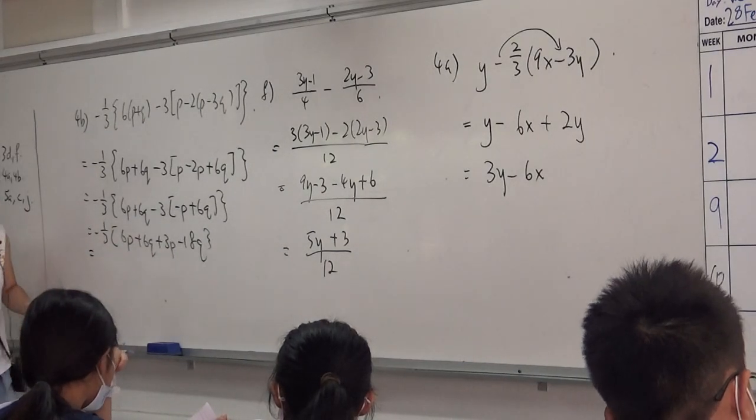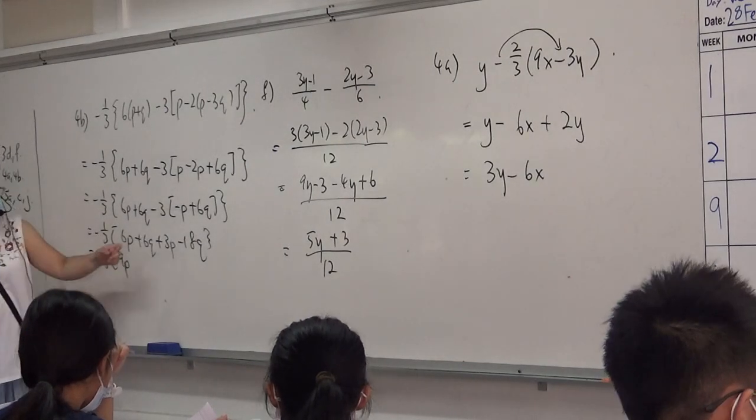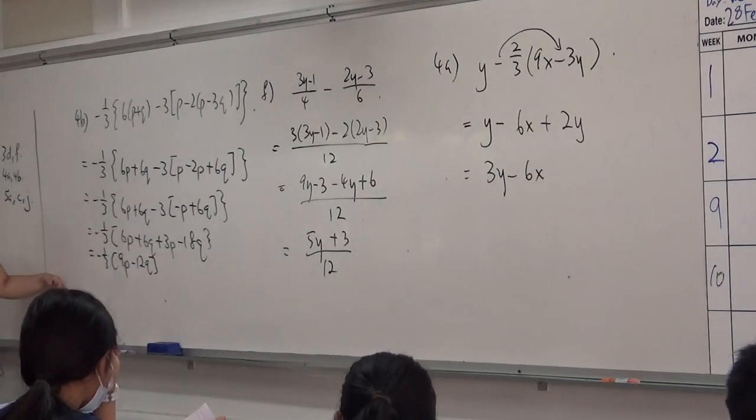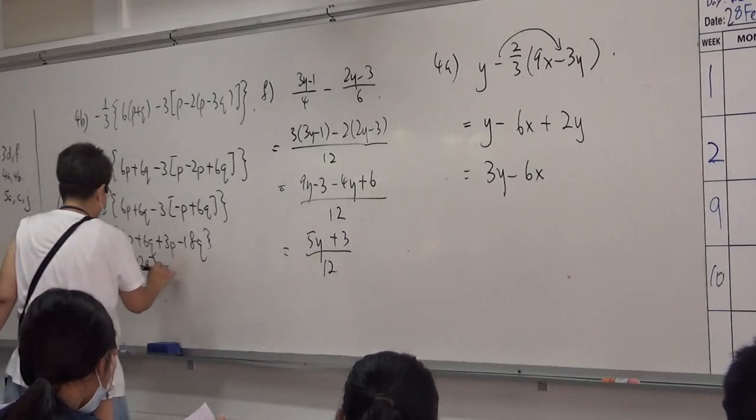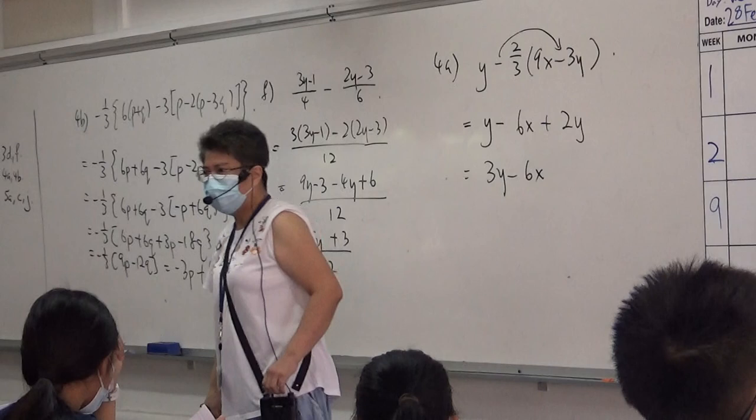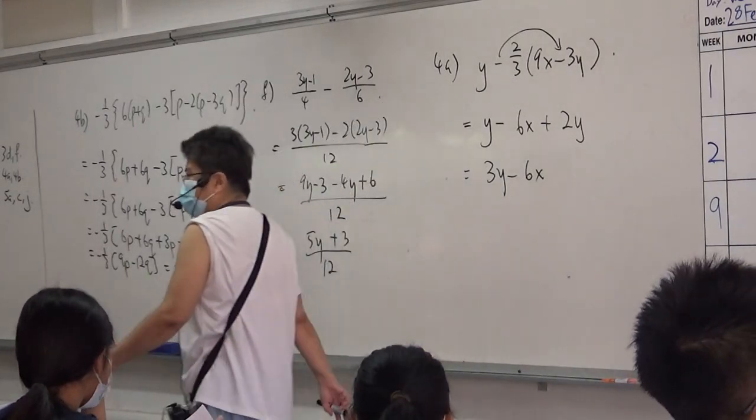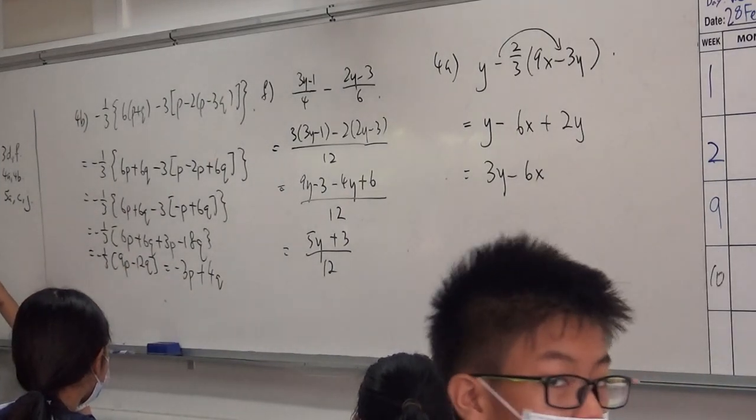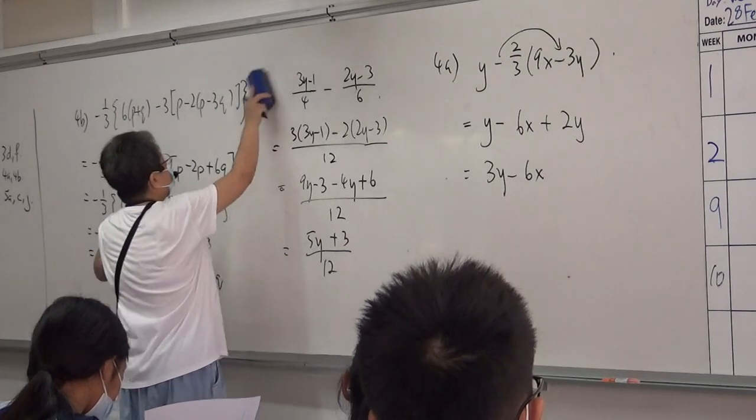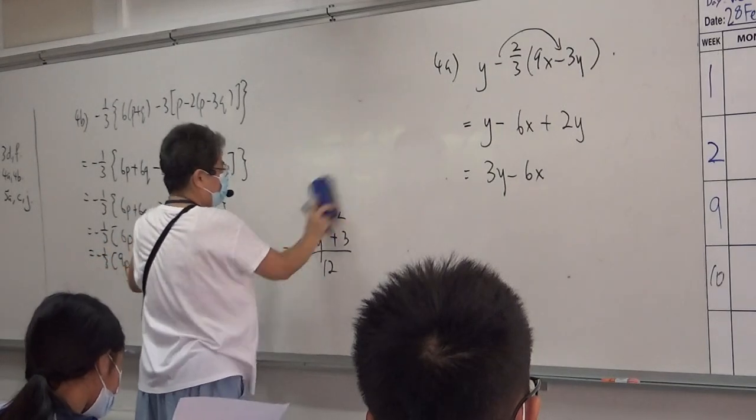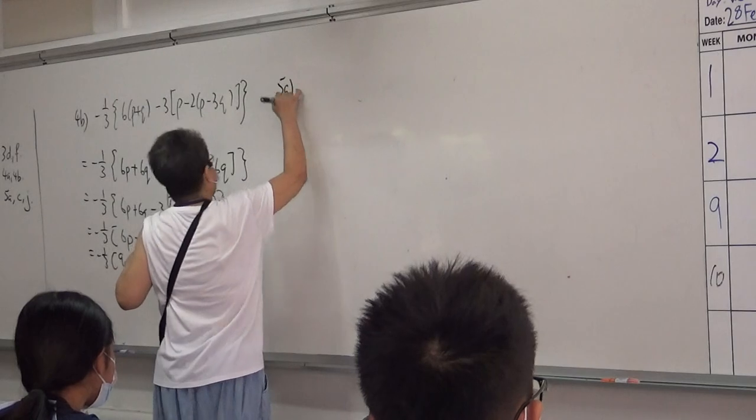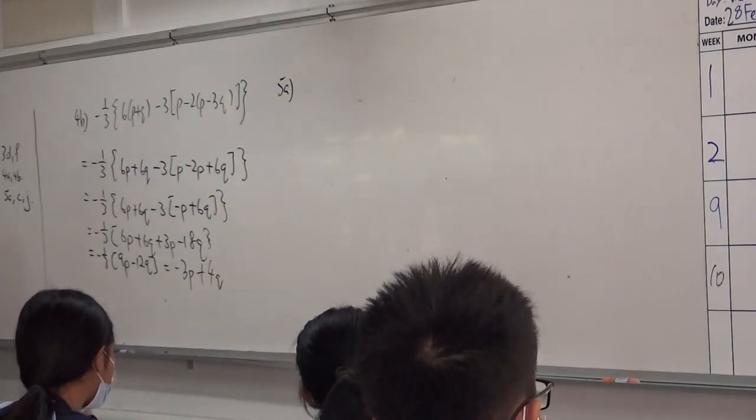This over here becomes plus 3p, right? Minus 18q, right? Okay. What is 6p plus 3p? 9p. 9p, good. What is 6q minus 18q? Negative 12q, right? Can't. Okay. Now I want the most value. Negative 3p, right? Plus 1. Plus 4q. Minus and minus. Minus and minus minus plus. Is that good? So you can do it over there. Everybody okay? That's your 4a4. Okay, tackling 5q.